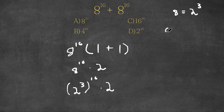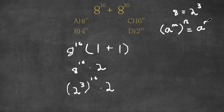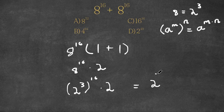Now, if we have something in the form a to the power of m to the power of n, this is equal to a to the power of m times n. So in this case, 2 to the power of 3 to the power of 16 is going to equal 2 to the power of 3 times 16. And we are still multiplying this by 2.